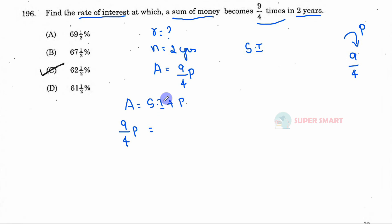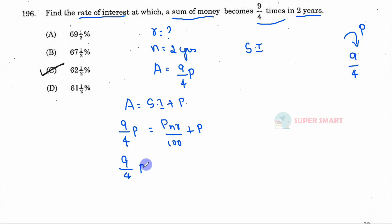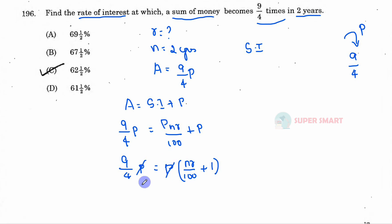Using the Simple Interest formula: Amount = Simple Interest + Principal, which is PNR divided by 100, plus the Principal equals 1. Taking the principal as common, we get 9/4 × P equals Principal common out, NR divided by 100 plus 1. P cancels, giving us 9/4 = NR/100 + 1.